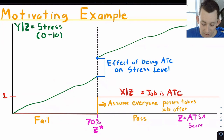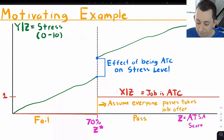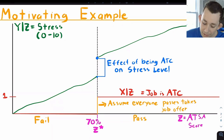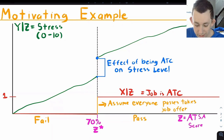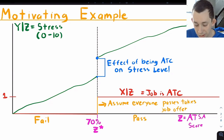In green we have your stress level given your ATSA score. It's a continuous variable of your ATSA score all the way up until 70 because you are not an air traffic controller, and then right when you just barely pass this test your stress level jumps up. It jumps because you've changed from not being to becoming an air traffic controller. After that, your stress level is still a continuous function of your Z or ATSA score. This jump in your outcome variable represents the effect of becoming an air traffic controller on your stress level.